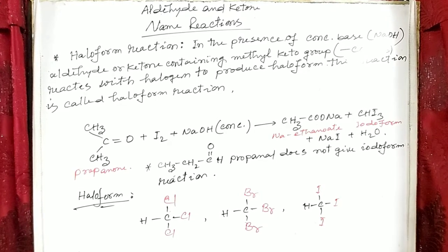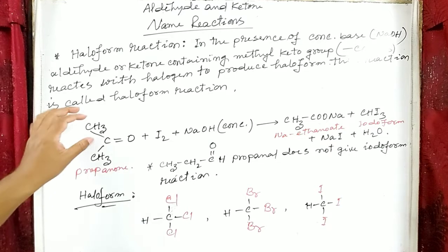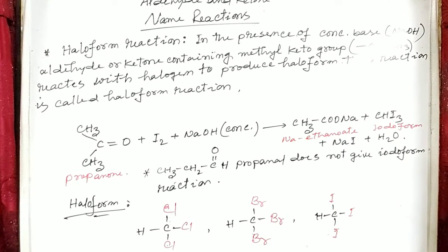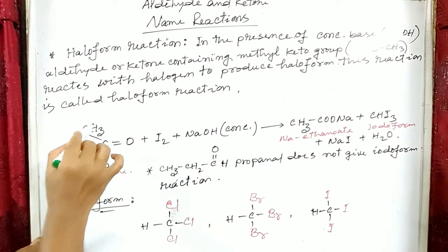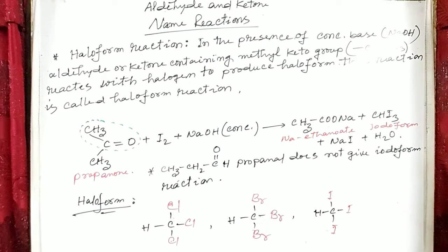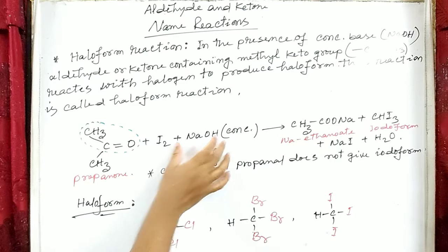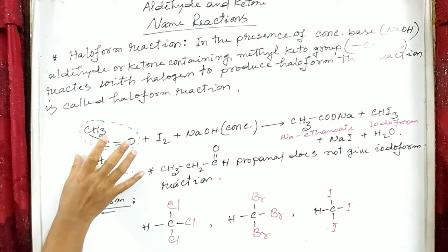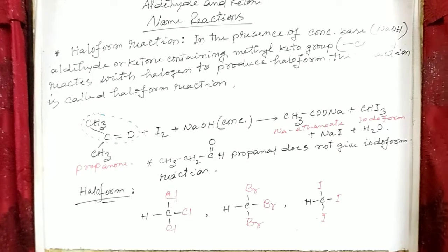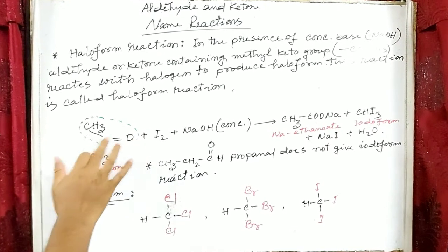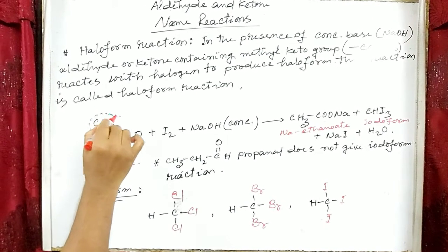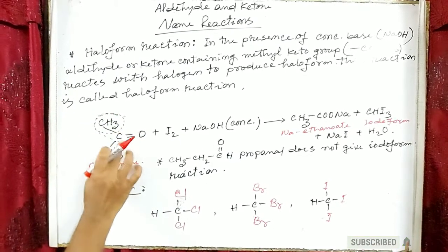Now, the haloform reaction. The condition for haloform reaction is that there must be a methyl ketone group — also known as an acetyl group — present in the aldehyde or ketone. In the presence of concentrated base like sodium hydroxide, aldehyde or ketone containing a methyl ketone group reacts with halogen to produce haloform. This reaction is called the haloform reaction. For example, in propanone, this methyl ketone group forms the haloform (iodoform in the case of iodine).